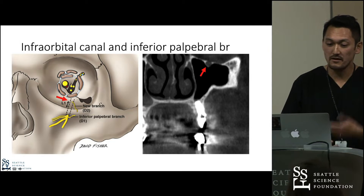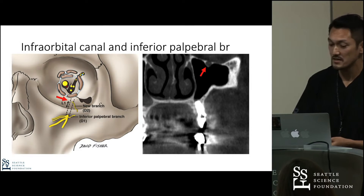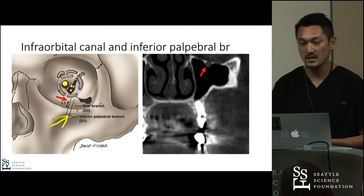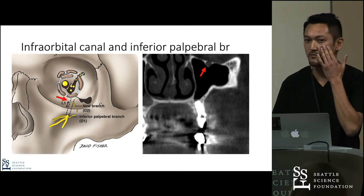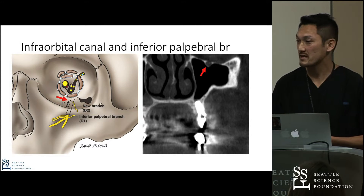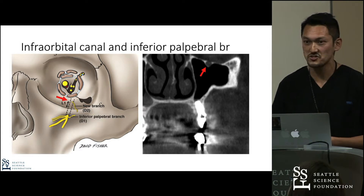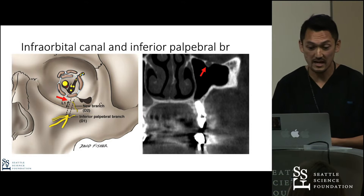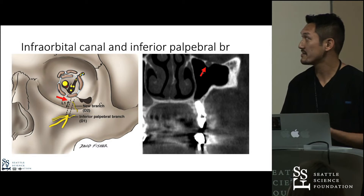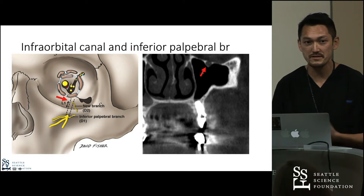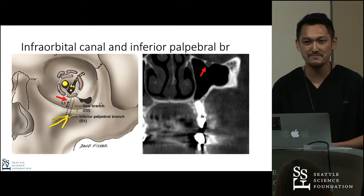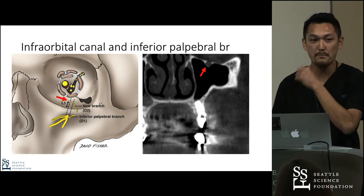The infraorbital canal lies just underneath the very thick bony wall of the maxillary sinus. The right picture shows the coronal section of CT imaging of the patient, and the red arrow shows the infraorbital canal. If you have some injury of the anterior wall of the maxillary sinus, it can cause injury to the infraorbital canal as well — it's very easy to be damaged because the bony wall is very thin. If the infraorbital canal is damaged, the infraorbital nerve can be damaged, causing numbness of the cheek, numbness of the nasal septum, and numbness of the upper lip.